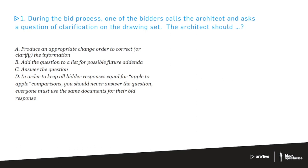Because so much of the discussion is around contracts and communication systems. But let's jump into the first question. So the first one we have here is, during the bid process, one of the bidders calls the architect and asks a question of clarification on the drawing set. The architect should, question mark. And then we have four possible answers. Produce an appropriate change order to correct or clarify the information. Add the question to a list for a possible future addenda. Answer the question. In order to keep all the bidder responses equal for Apple to Apple comparisons, you should never answer the question. Everyone must use the same documents for their bid response.